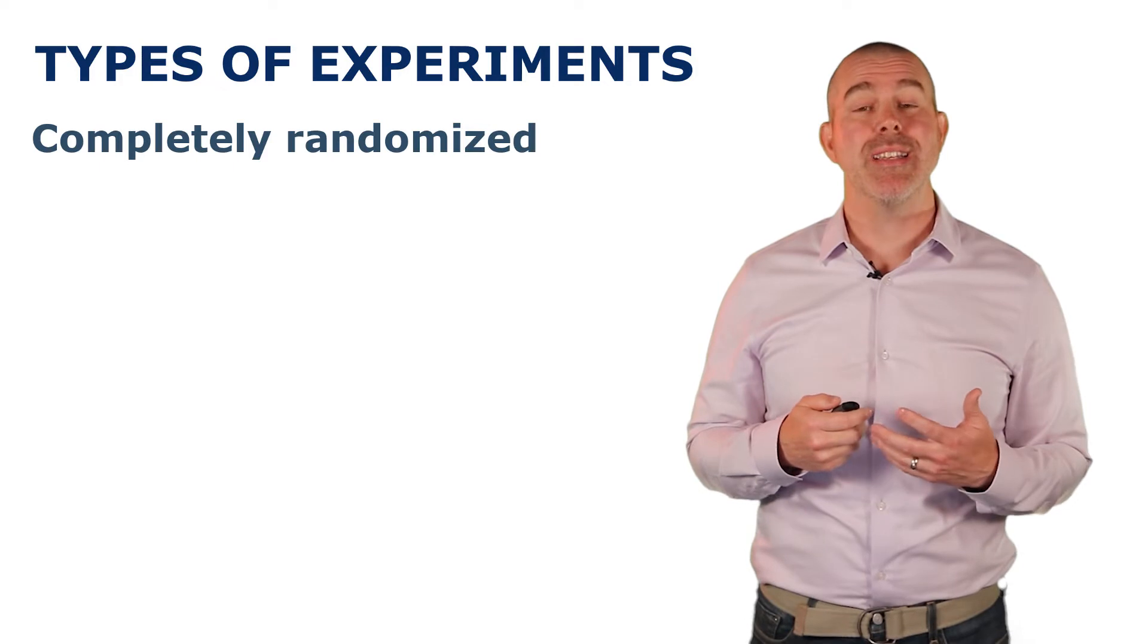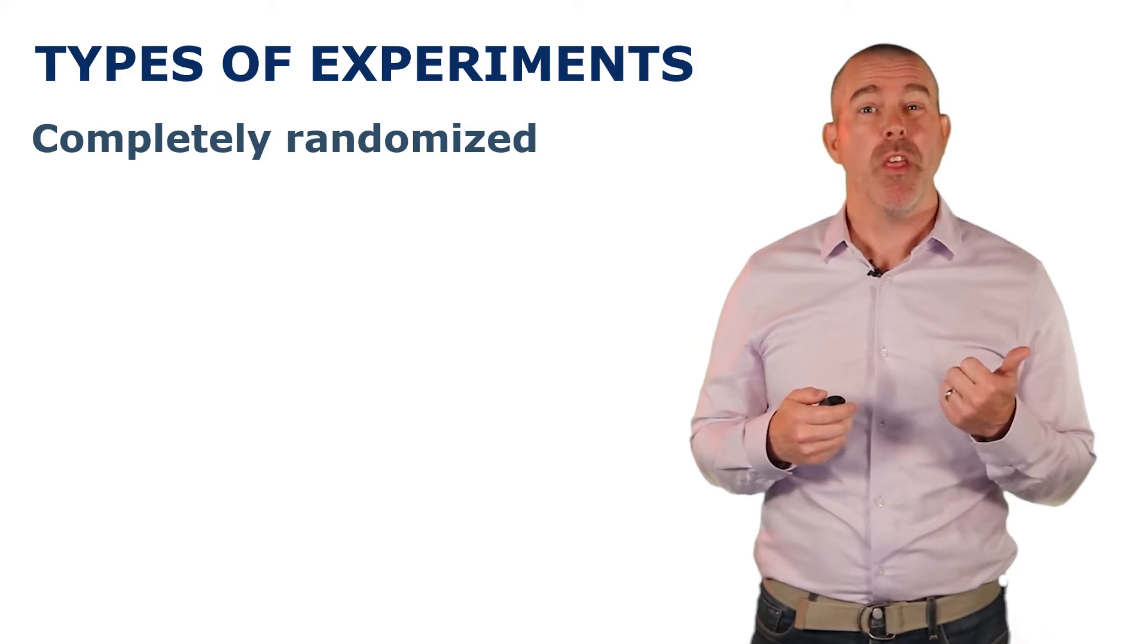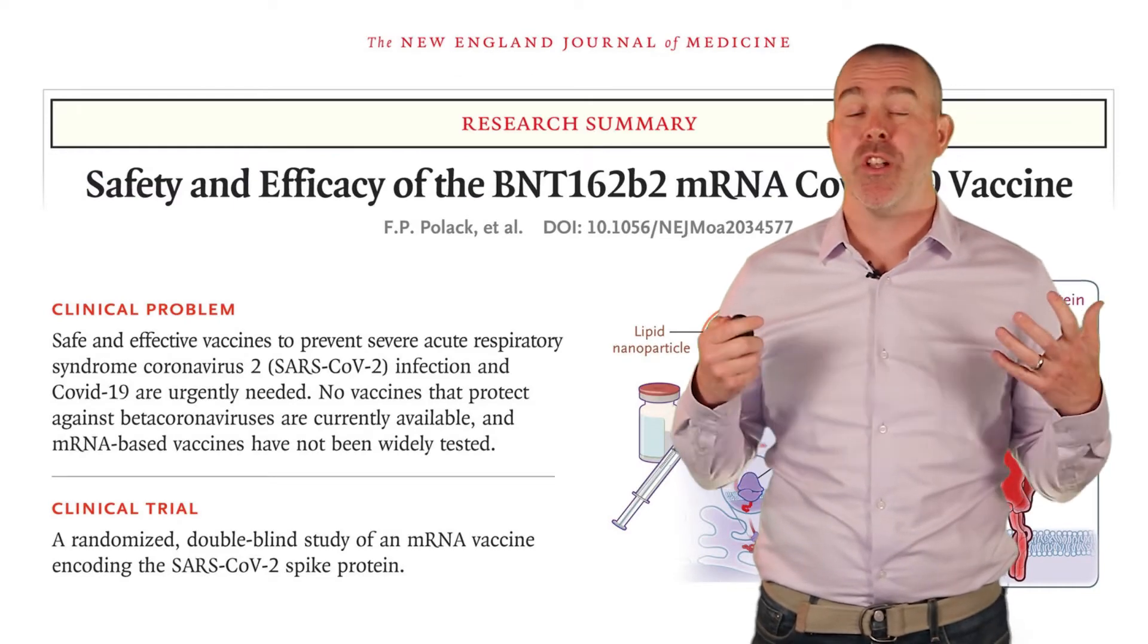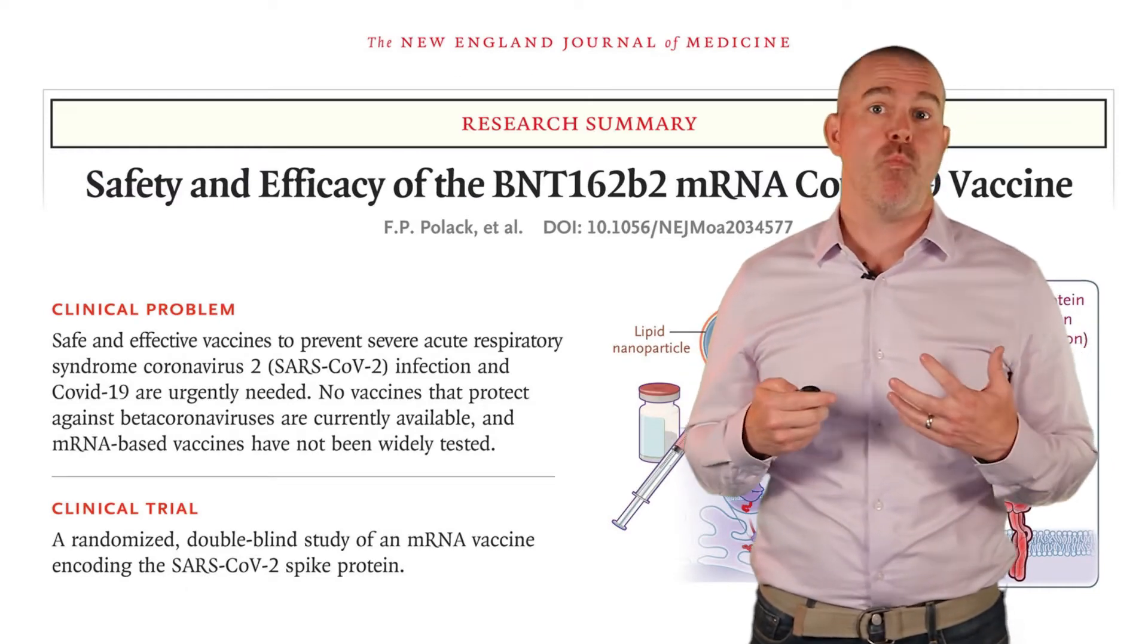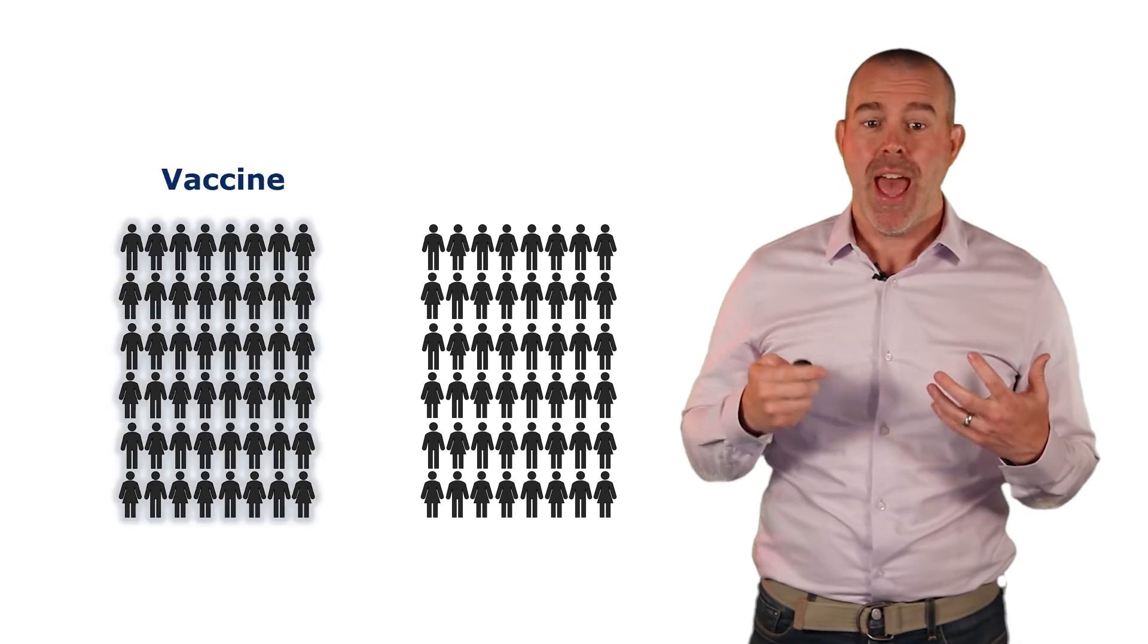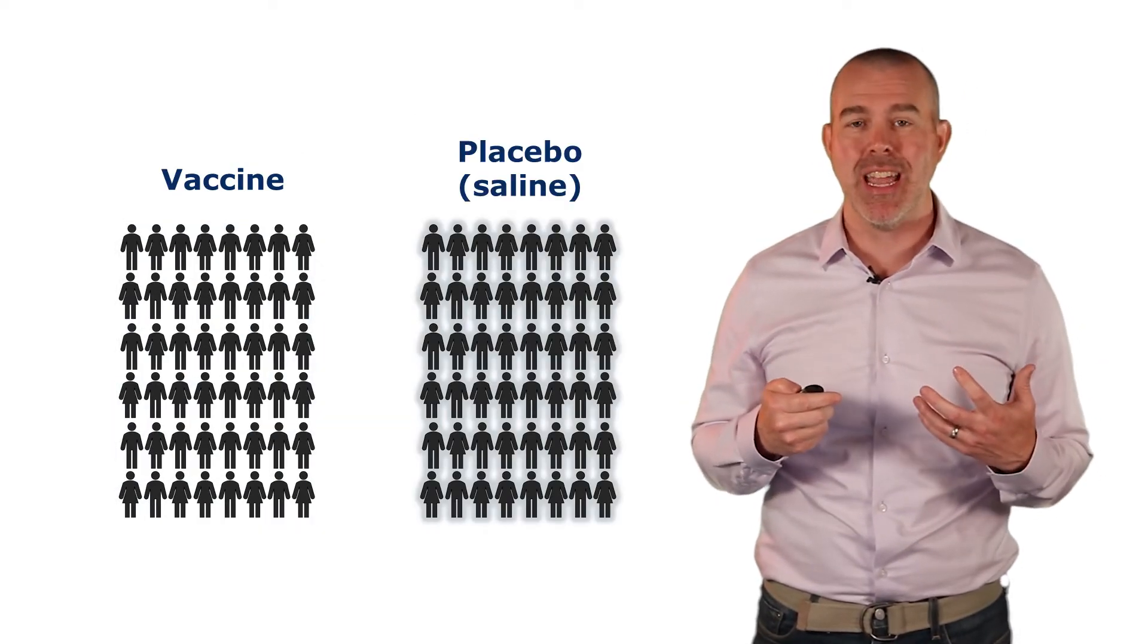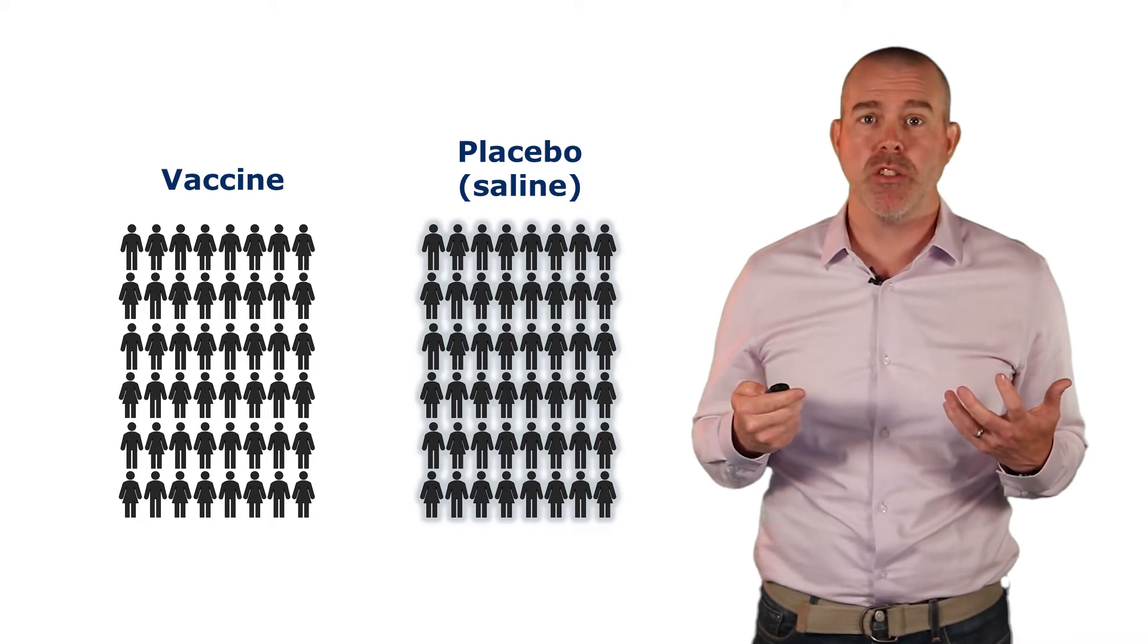Let's talk about different types of design experiments. One of the most common is completely randomized. A good example that's in the news right now is the COVID-19 vaccines, where they take volunteers. Half of them get the vaccine. The other half get some kind of placebo, like a saline shot. And then they compare results when they're done.